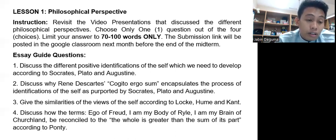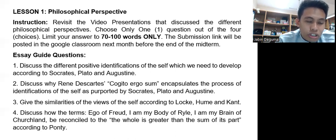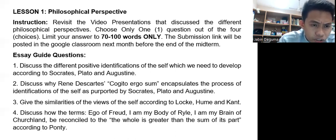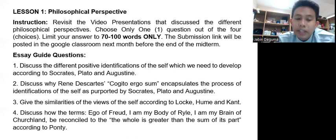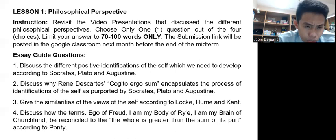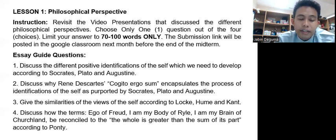Second option: discuss why Rene Descartes' Cogito Ergo Sum encapsulates the process of identification of the self as purported by Socrates, Plato, and Augustine. Third: give the similarities of the self according to Locke, Jung, and Kant.